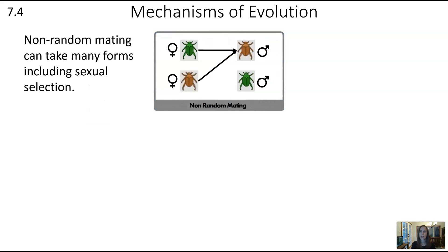The next mechanism of evolution is non-random mating. When individuals in a population are selectively breeding with members that have a certain trait, even if it's not thought out, this can result in evolution. In this picture it's showing sexual selection where the brown male beetle has higher fitness and higher reproductive success than the green male beetle.